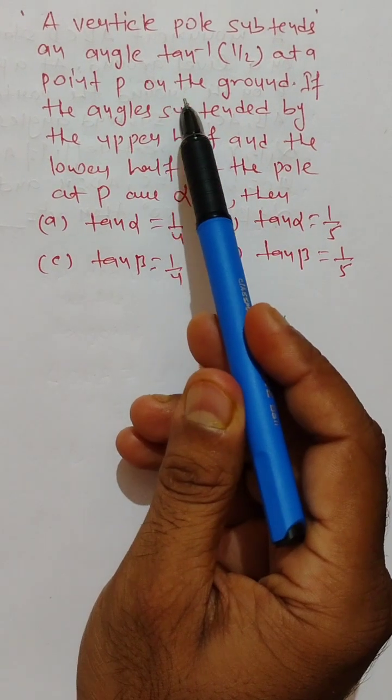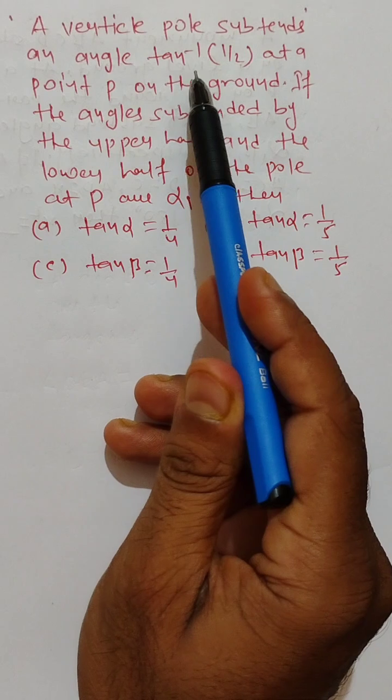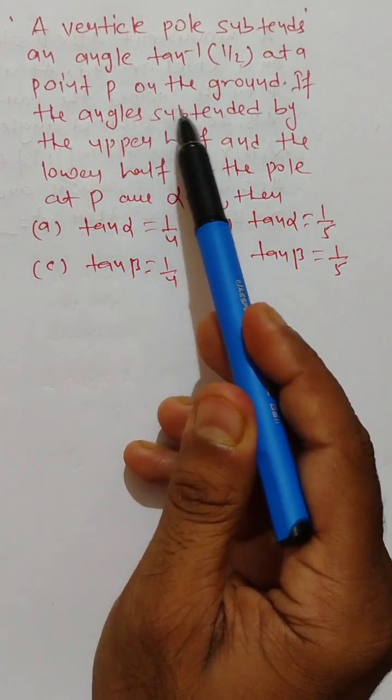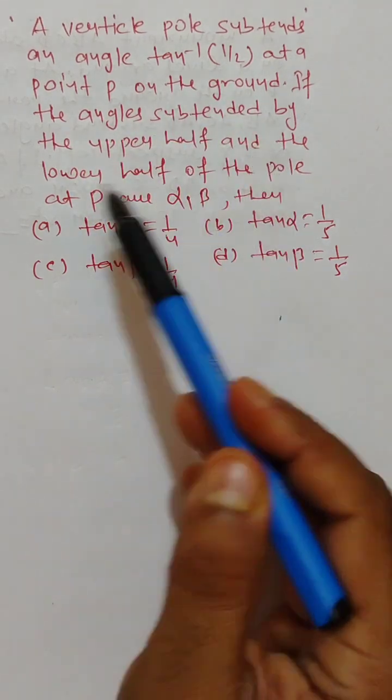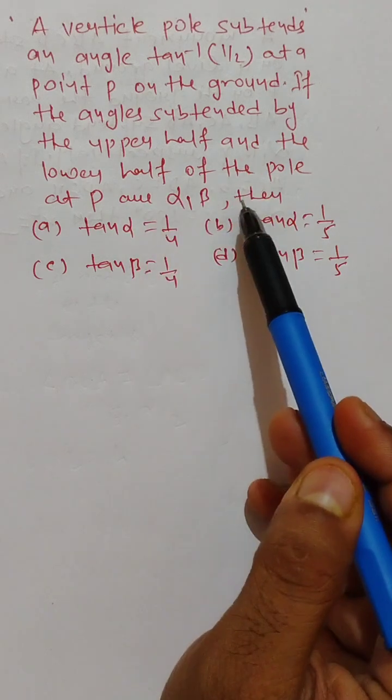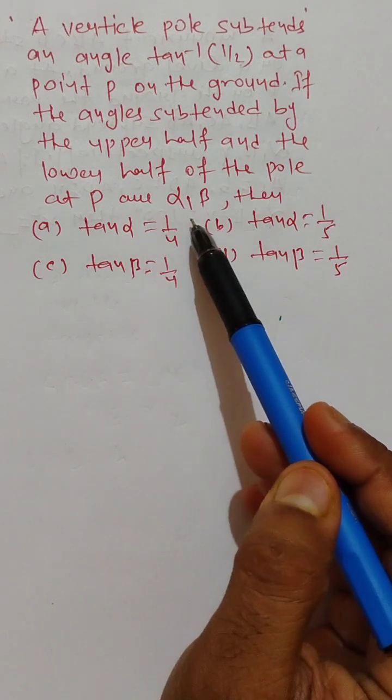In this problem, a vertical pole subtends an angle tan inverse 1 by 2 at a point P on the ground. If the angle subtended by the upper half and the lower half of the pole at P are alpha and beta,